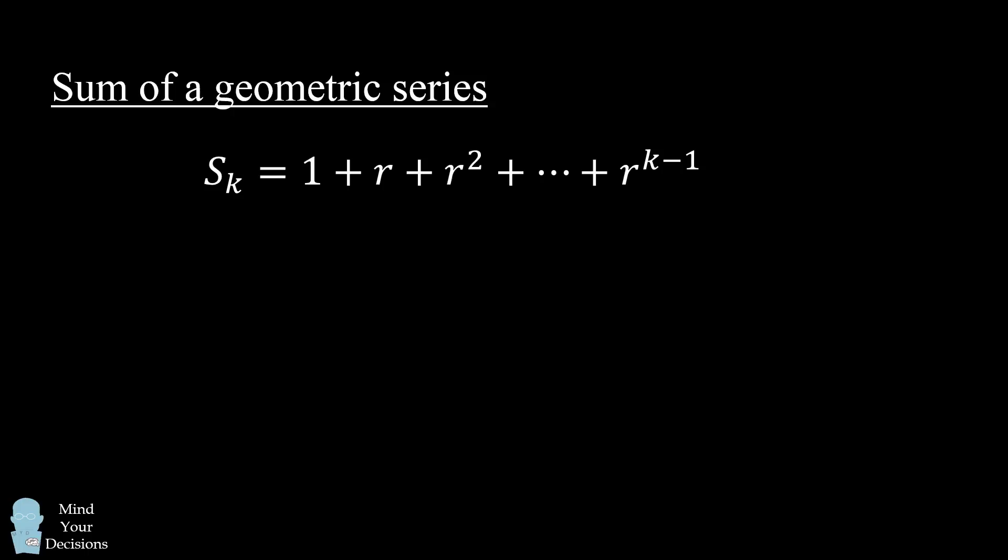To find the sum we do a neat little trick. We multiply the sum by the common ratio r. Look at what this will do to each term. The first term 1 becomes r, the second term r becomes r squared, and the pattern continues. We've essentially shifted over the summation, and we get one more new term, r to the power of k.